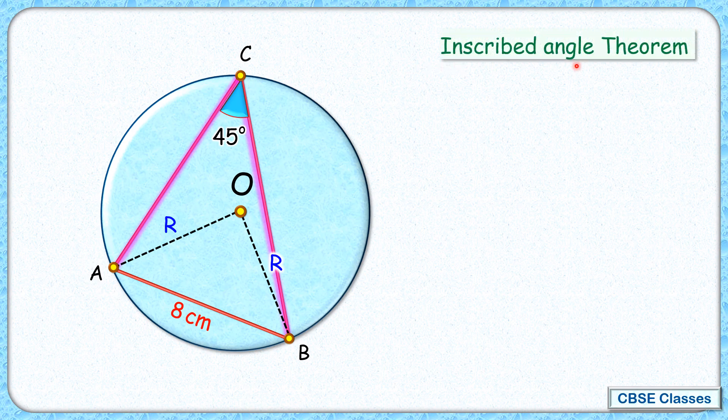And by inscribed angle theorem, it will subtend twice of 45 degrees at the center, so 2 times 45 is 90 degrees. So at the center, it will subtend an angle of 90 degrees. Now in triangle OAB...